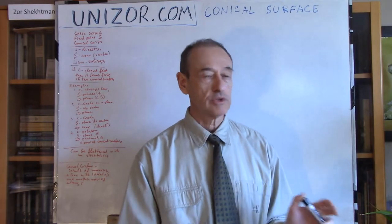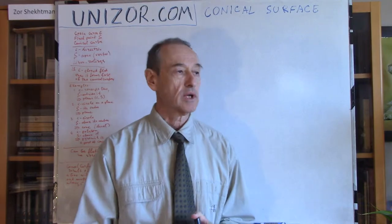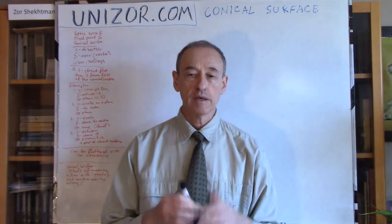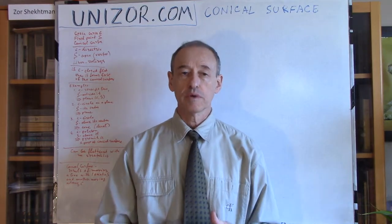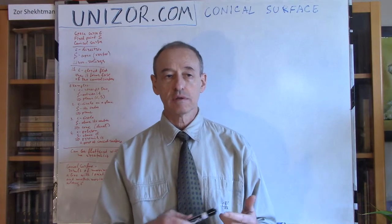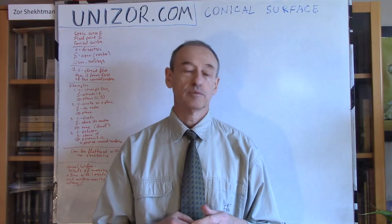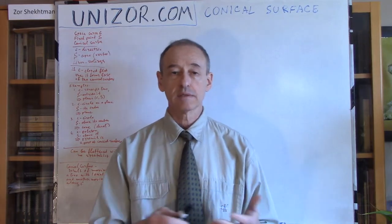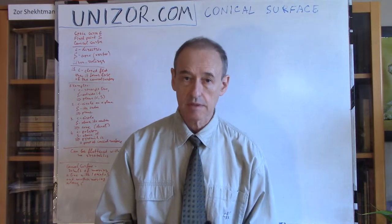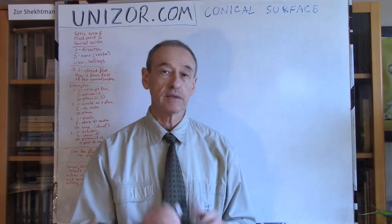I'm trying to introduce certain concepts in solid geometry and today's topic is conical surfaces. I assume you are already familiar with the previous lectures introducing other elements of solid geometry: points, lines, planes, and cylindrical surfaces. Right now it's basically a continuation — a different kind of surface.